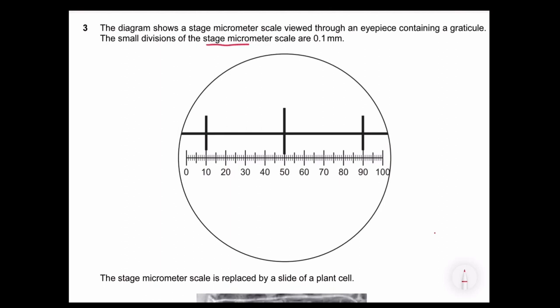Given here the stage micrometer scale is 0.1mm. So now from the diagram, you have to identify which one is the stage micrometer scale. Like I said, stage micrometer scale is usually the one that is larger, which is worth 0.1mm. So I know that this one is 0.1mm.